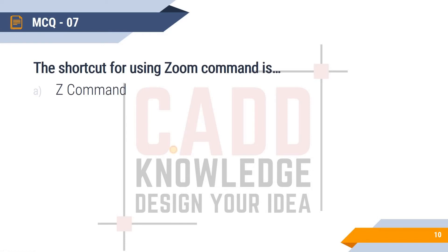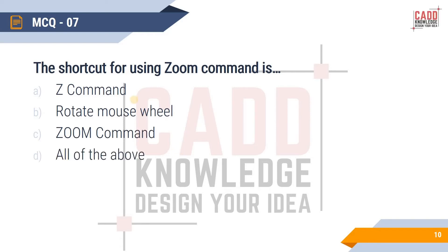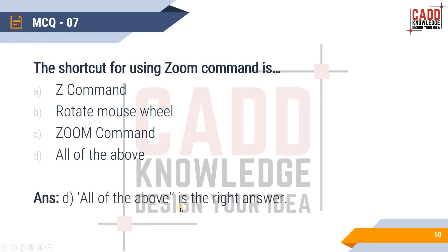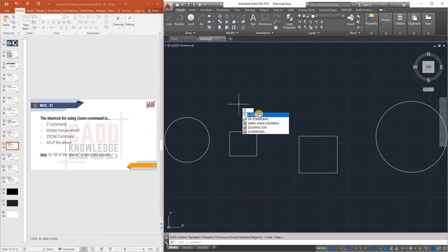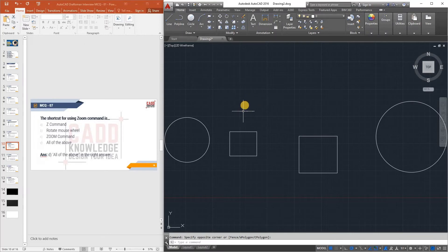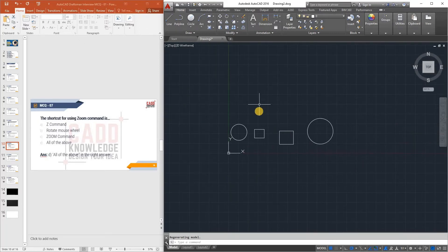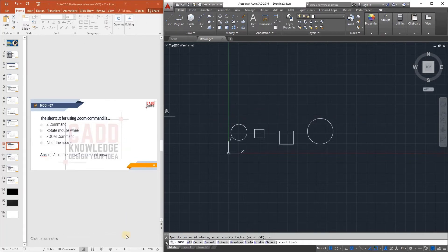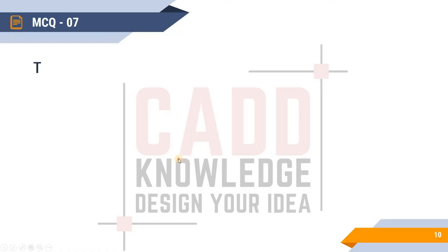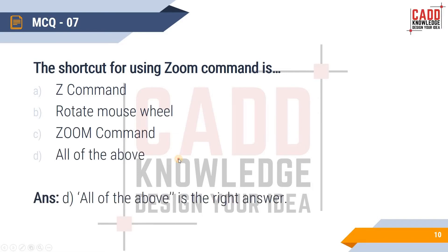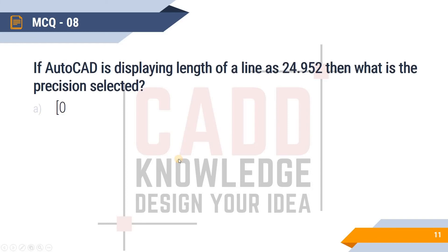MCQ 7: The shortcut for using the Zoom command is: Z command, rotating the mouse wheel, the Zoom command, or all of the above? The answer is all of the above. Typing Z activates Zoom, rotating the mouse wheel zooms in and out, and typing ZOOM also works — so all of the above is correct.